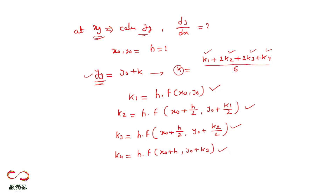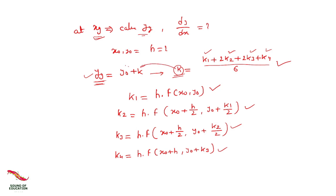After getting all these values of k, we put them into the equation k = (k1 + 2k2 + 2k3 + k4) / 6 to get the value of k. Then put k into yg = y0 + k to get the final answer yg. That is the simple step-by-step procedure. Now let's move to the actual numerical so you can understand in detail how to solve it.